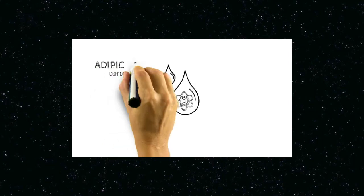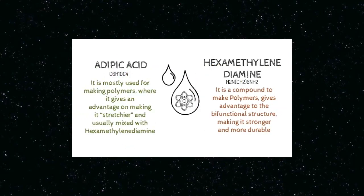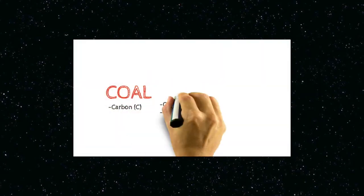Adipic acid is mostly used for making polymers where it gives an advantage of making items stretchier and is usually mixed with hexamethylenediamine. Hexamethylenediamine is a compound to make polymers with a bifunctional structure, making it stronger and more durable. Moreover, this product is made entirely out of raw materials.